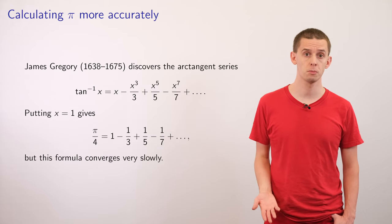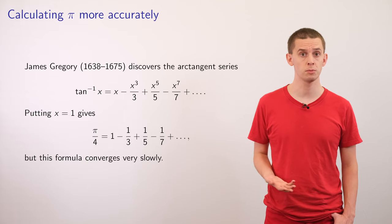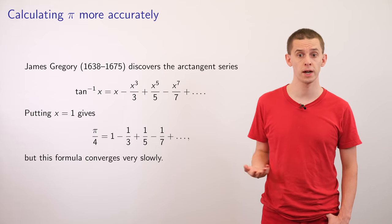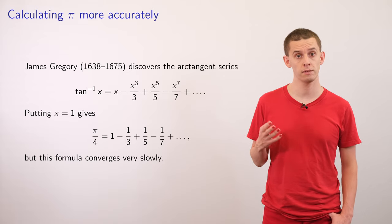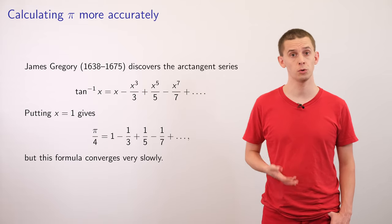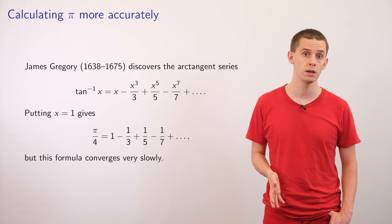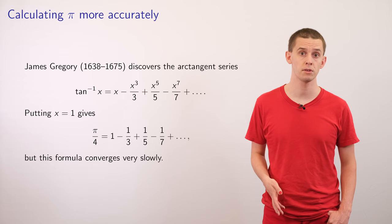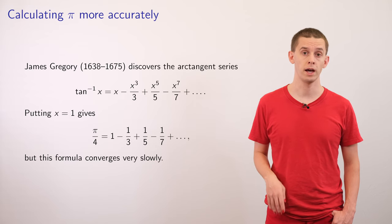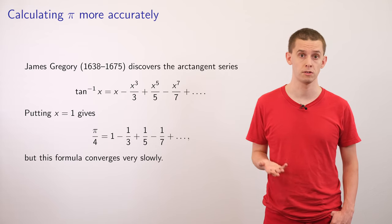Returning to the calculation of pi, one of the later advancements that was made was by James Gregory, a Scottish mathematician. And he discovered the arc tangent series, where the inverse tangent of x is equal to x minus x cubed over 3 plus x to the fifth over 5 minus x to the seventh over 7 and so on.